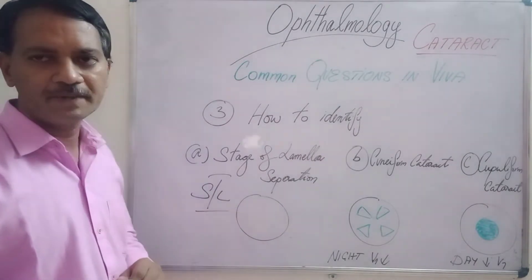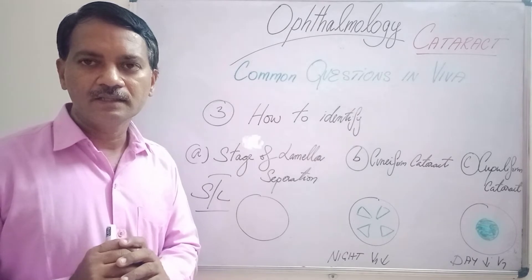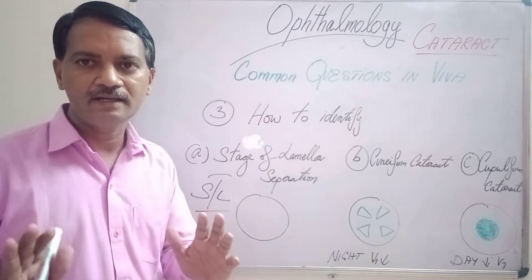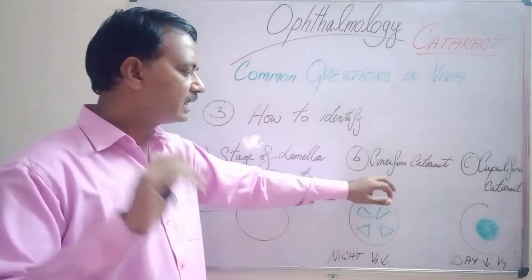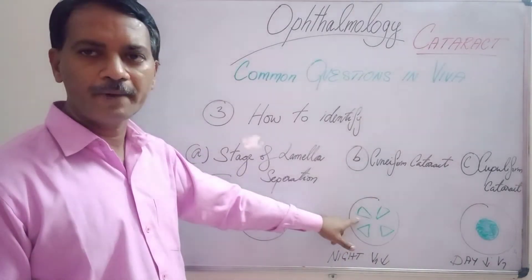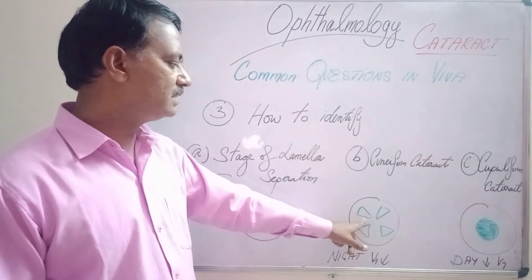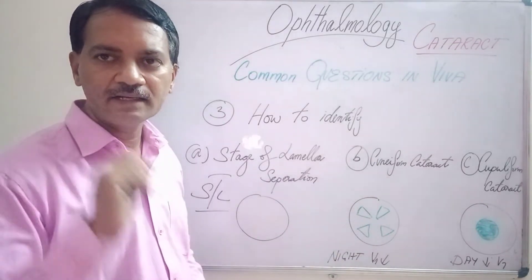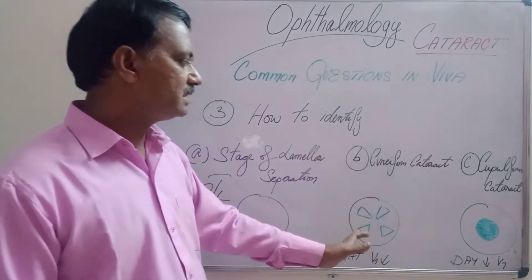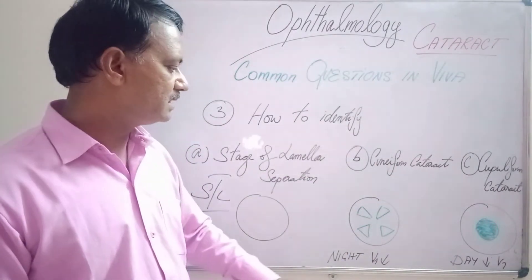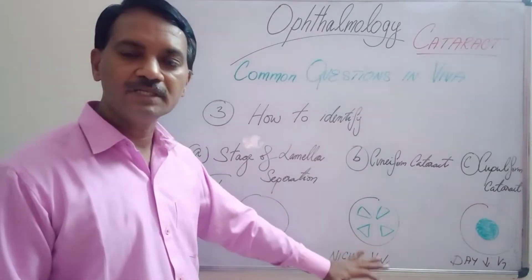In the stage of lamellar separation, the patient will be complaining of glare whenever seeing a bright light. When it comes to a cuneiform cataract, even with the torch light you can see wedge-shaped opacities in the lens. These opacities will be grey or greyish-white in color. Whenever a patient has a cuneiform cataract, the patient's day vision will be good, while night vision will be very much reduced.